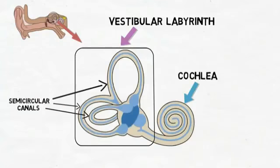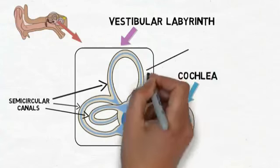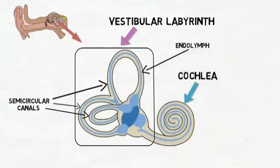Each of the canals can detect one of the following head movements: nodding up and down, shaking side to side, or tilting left and right. The semicircular canals are filled with a fluid called endolymph.